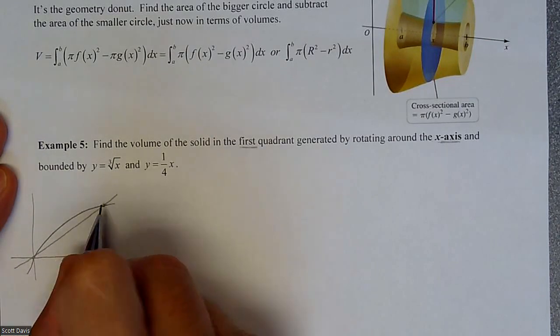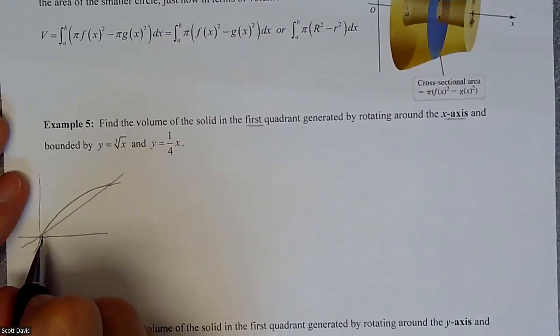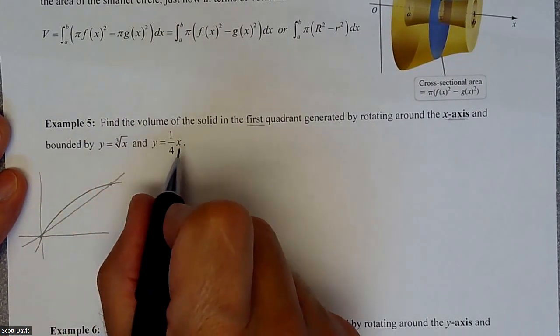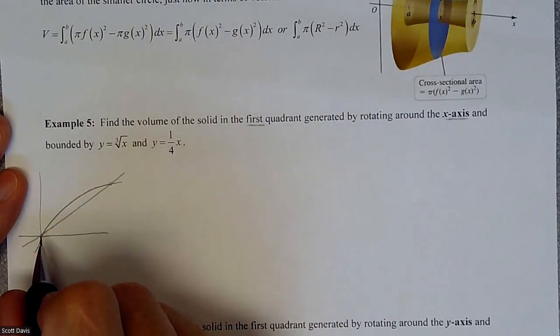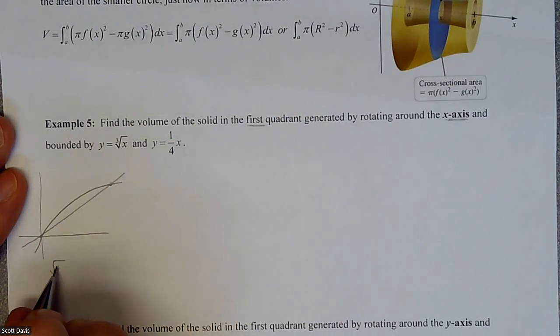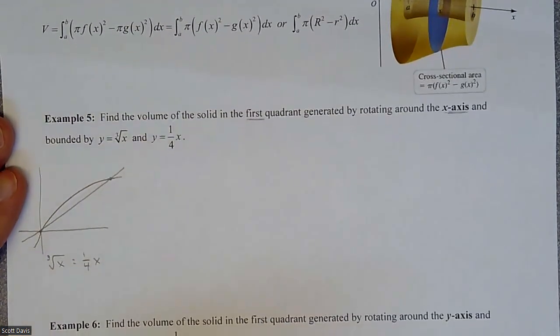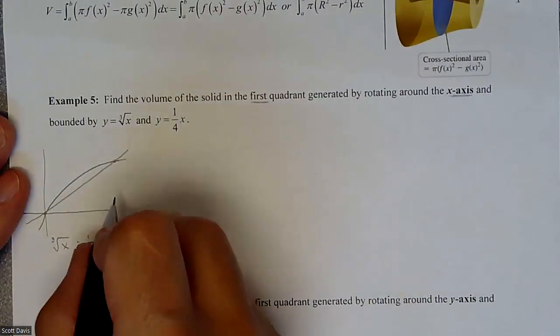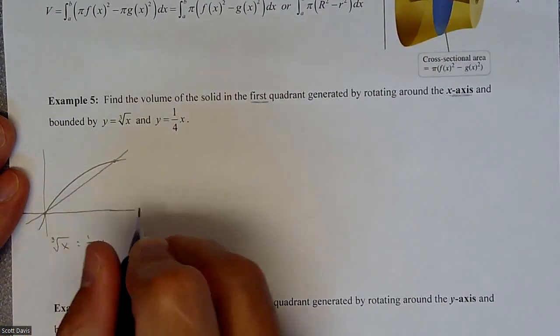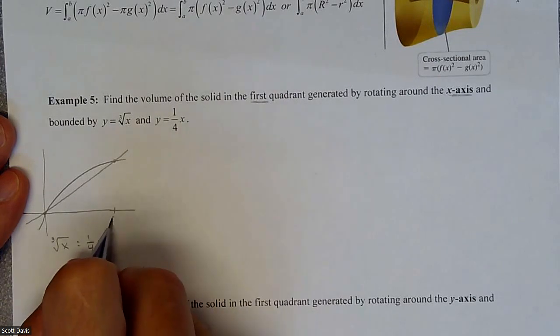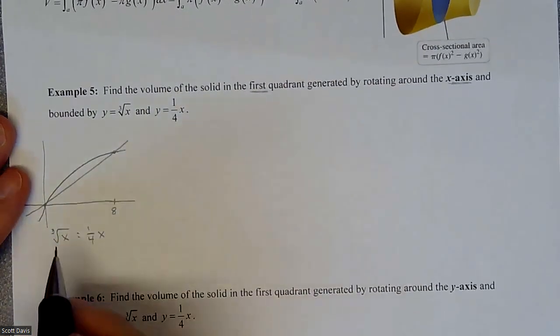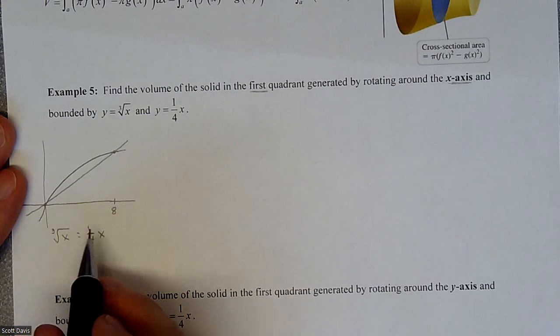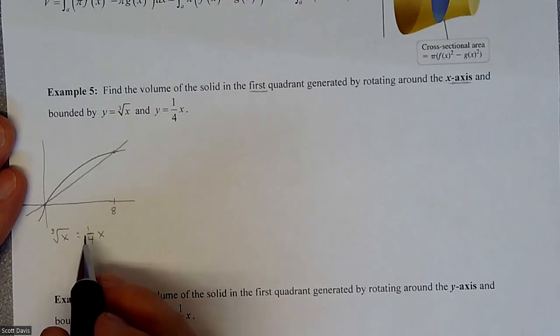I know they're going to cross at zero because when I plug in zero I'm getting zero, so there's one intersection. But where is it that the cube root of x is equivalent to that equation? If we solve it, we get an x value of eight. If I cube root eight I get a two, and if I plug in eight here and take a fourth of it I get a two.